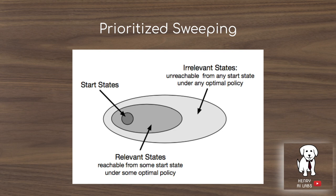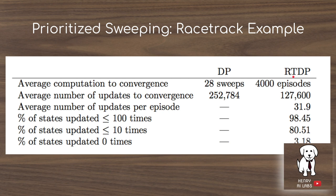This racetrack example illustrates the benefit: exhaustive dynamic programming sweeping over the entire state space takes twice as long as real-time dynamic programming, which only samples trajectories on-policy — focusing on states more likely to actually occur in the task.